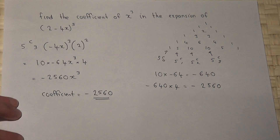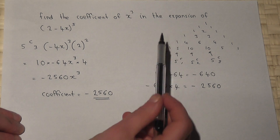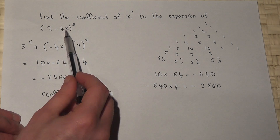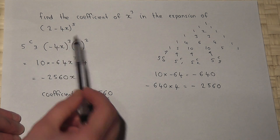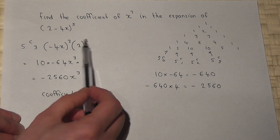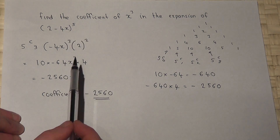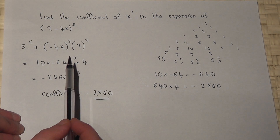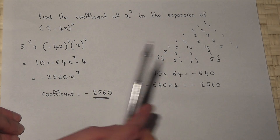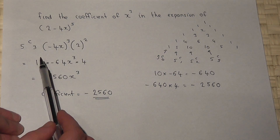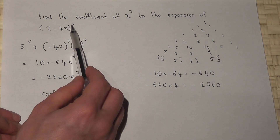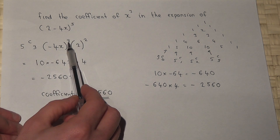As a recap: to get the x cubed term we used minus 4x to the power of 3. The powers always add to the overall power, so we need a 2 squared. And there is also the Pascal's triangle coefficient, which is given by 5C3.